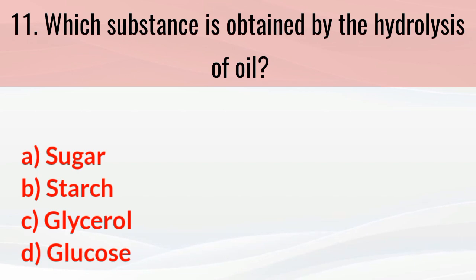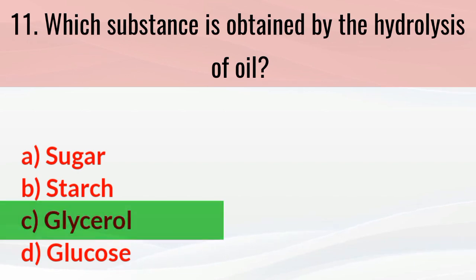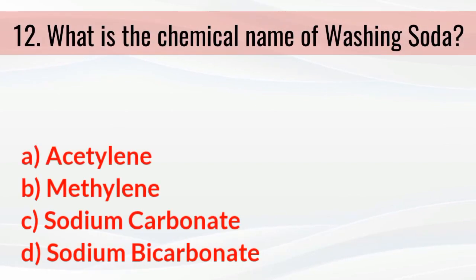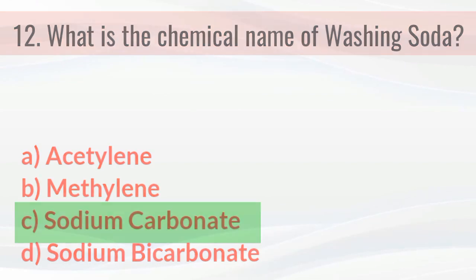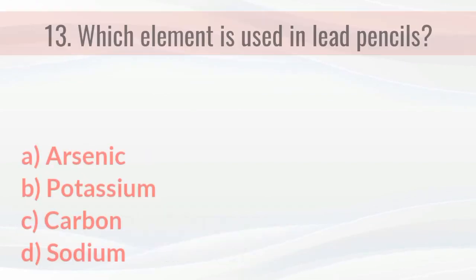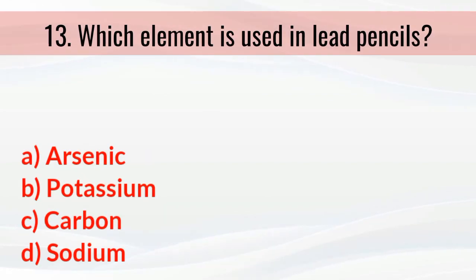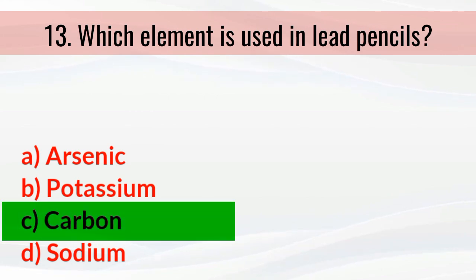Which substance is obtained by the hydrolysis of oil? The right answer is glycerol. What is the chemical name of washing soda? The right answer is sodium carbonate. Which element is used in lead pencils? The right answer is carbon.